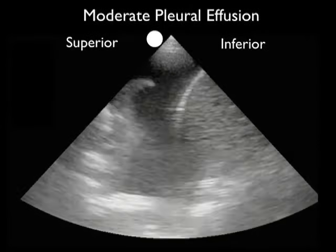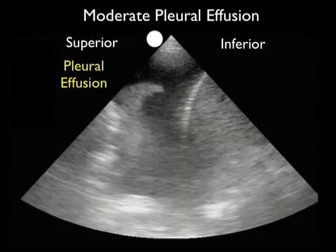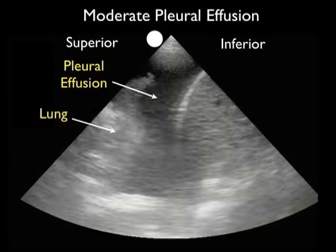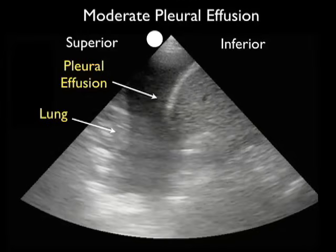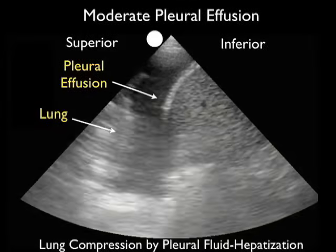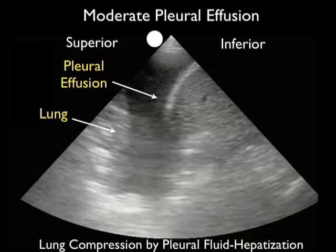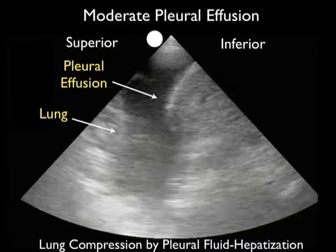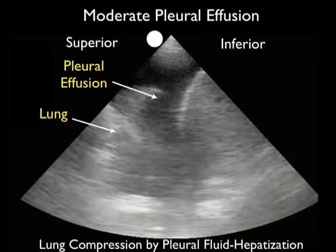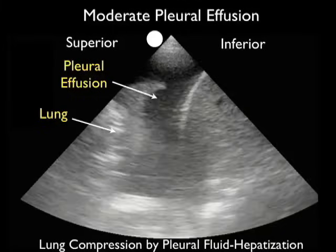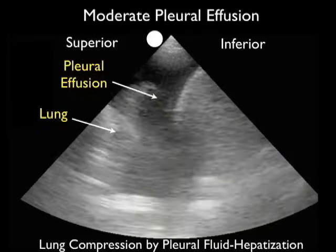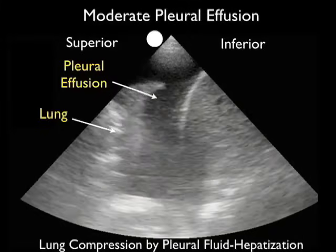Here's a moderate pleural effusion as taken from the right upper quadrant view. We see the liver to the inferior aspect, the curving white line of the diaphragm in the middle of the image, and fluid representing a pleural effusion superior to the diaphragm. Interestingly, we see the lung moving around, compressed down by the fluid within the chest cavity, taking on what appears like a liver within the chest — something called hepatization of the lung. This is commonly seen with a pleural effusion as it pushes in on the lung, making it more of a solid-type organ.